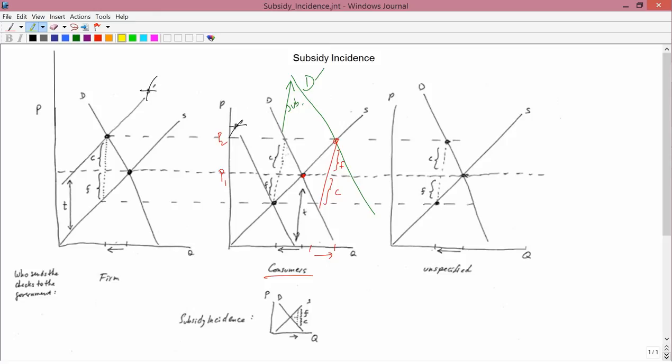Okay, how about if the firm gets the checks from the government? So here, you have a shift to the supply curve, but the supply curve shifts out, like this.